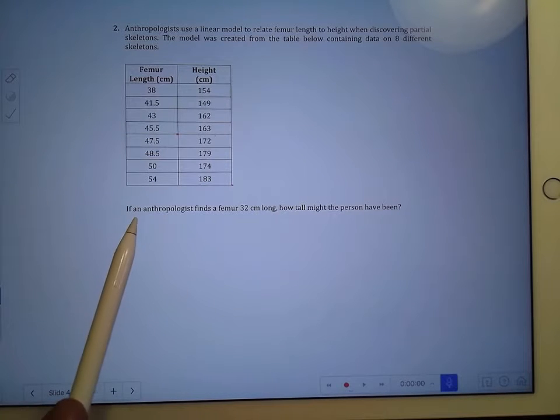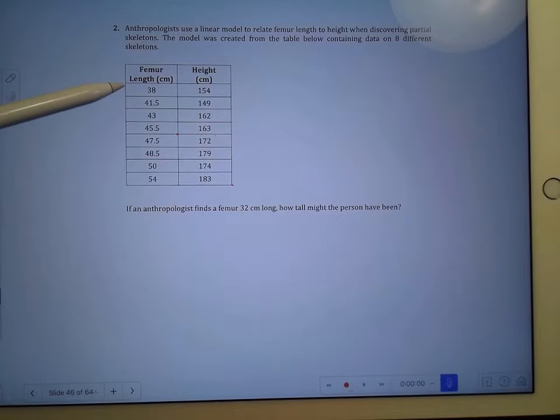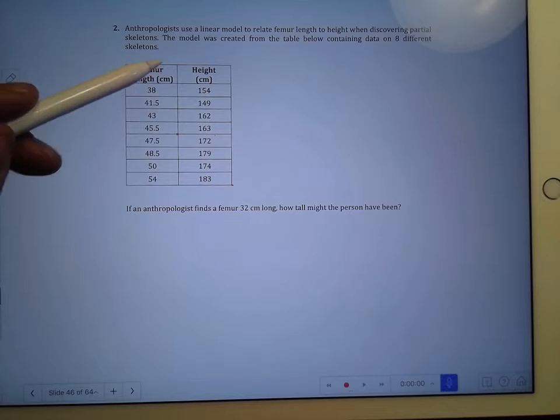The question is, if an anthropologist finds a femur 32 cm long, how tall might they have been? So if I want to put a 32 in this table, how could I find a matching possible height?